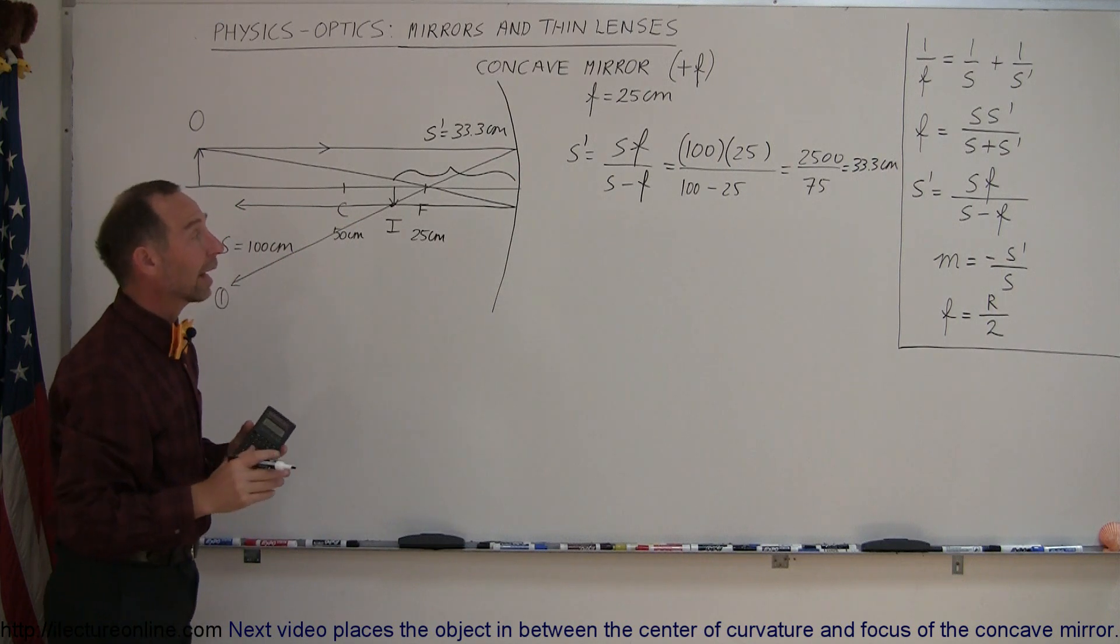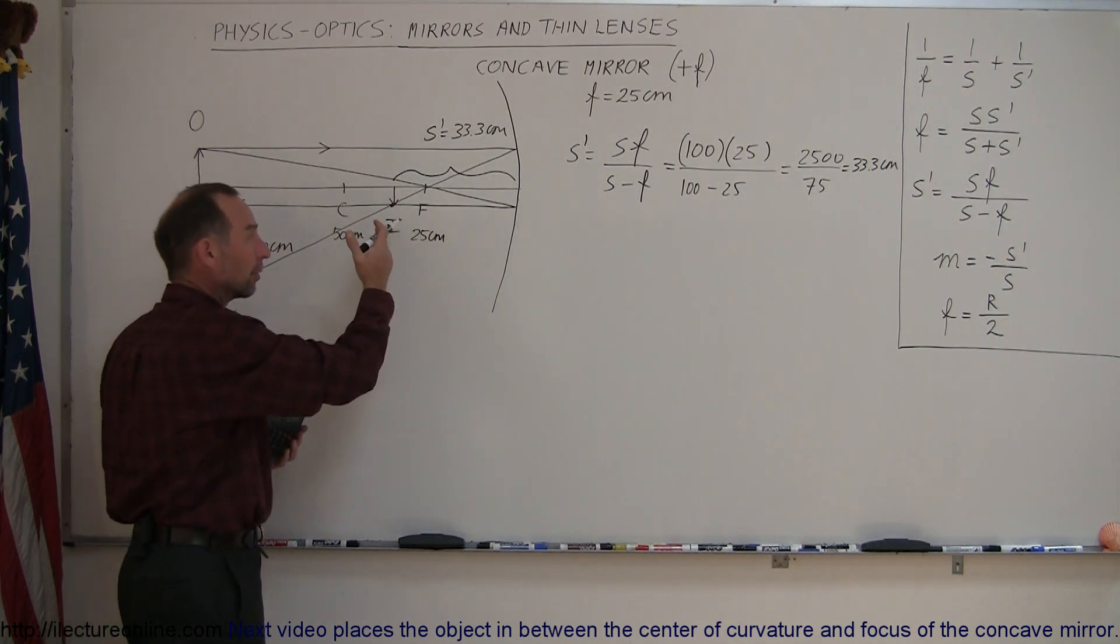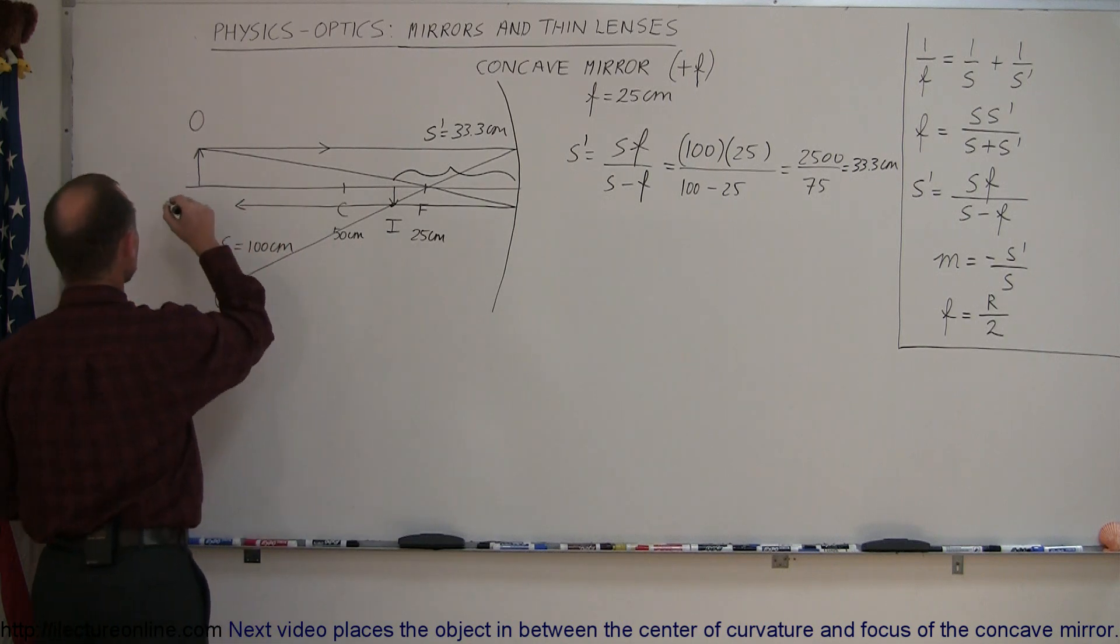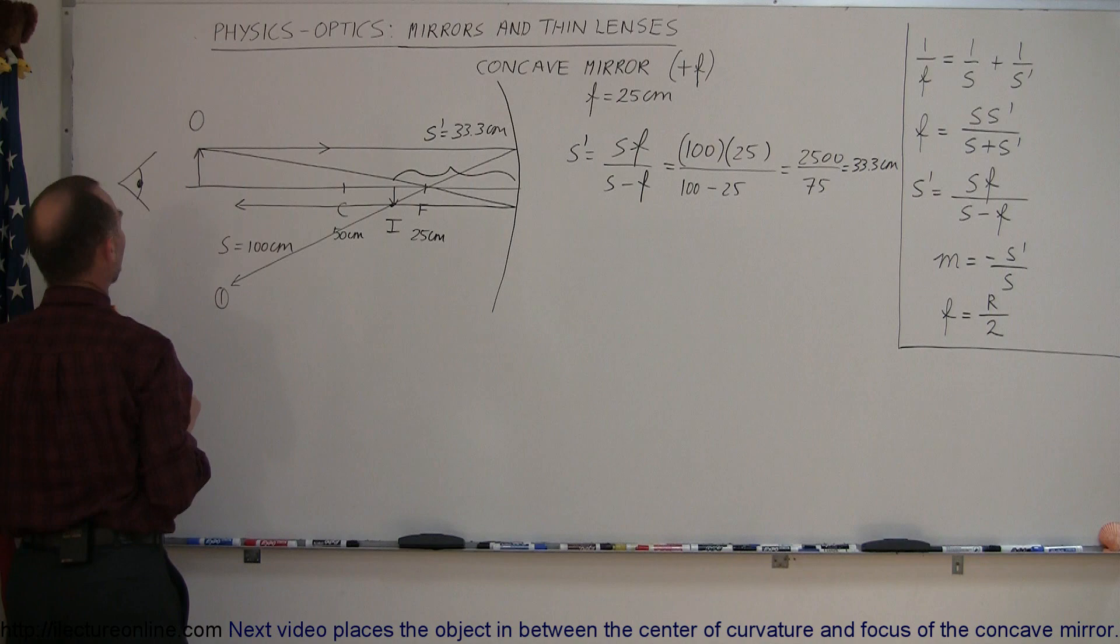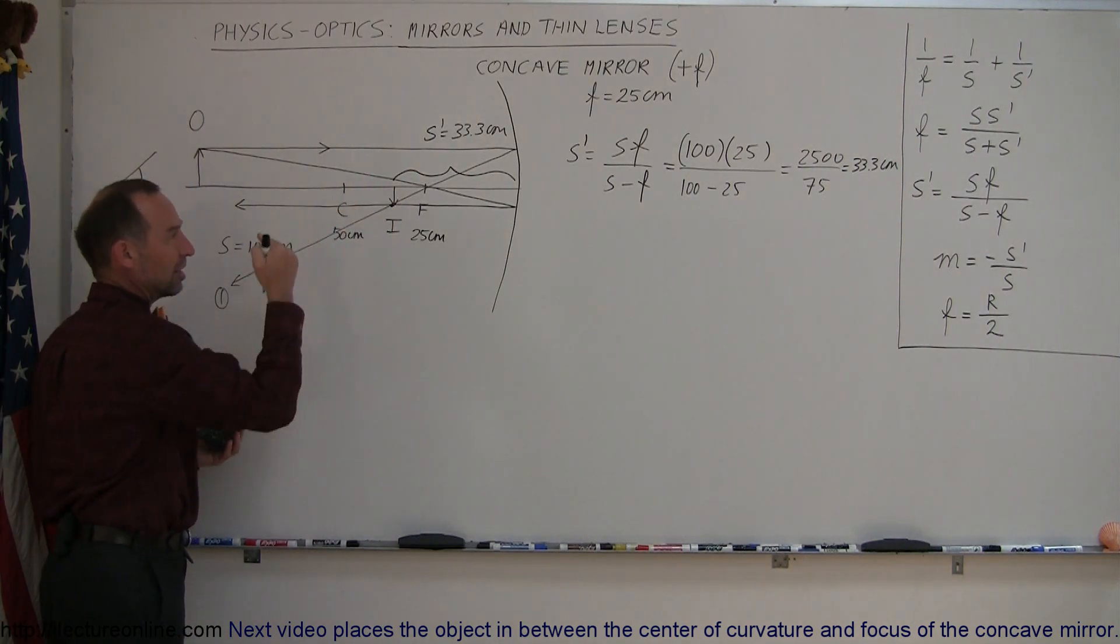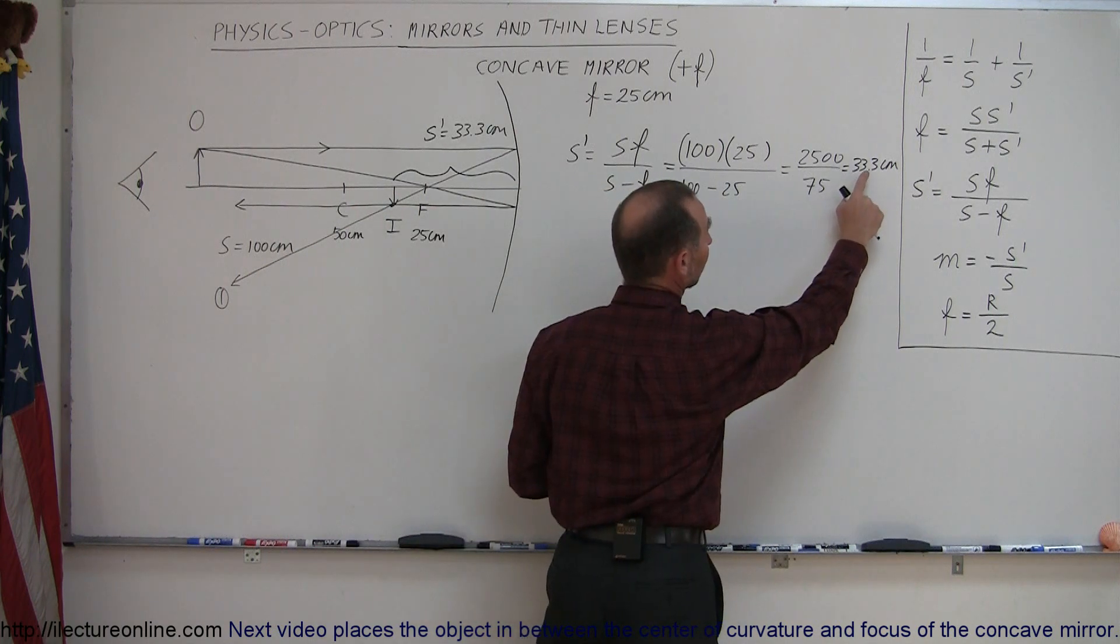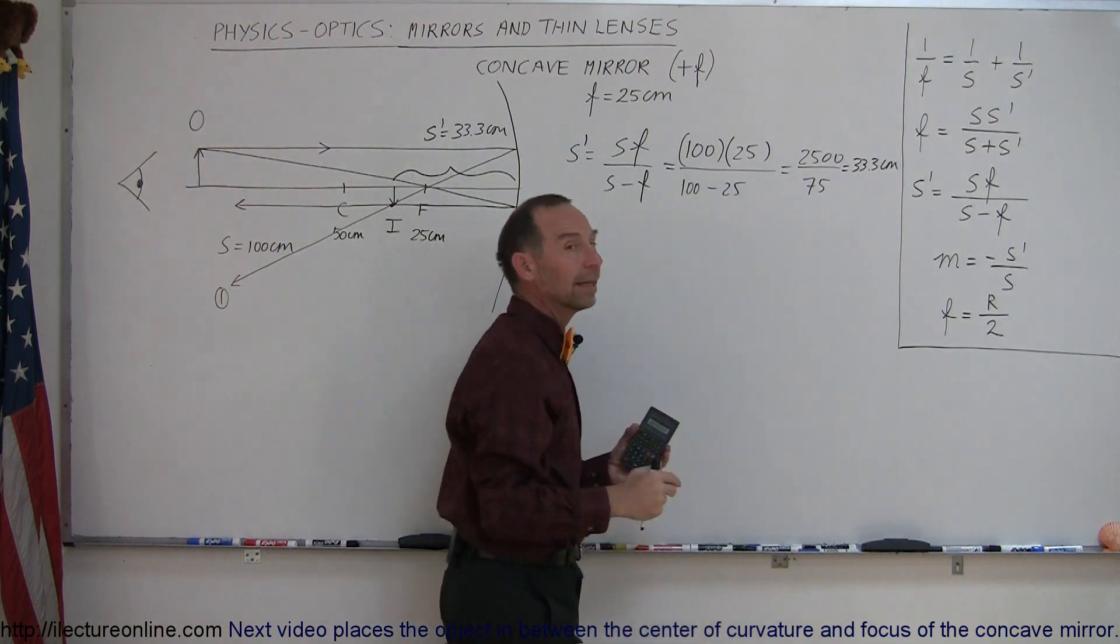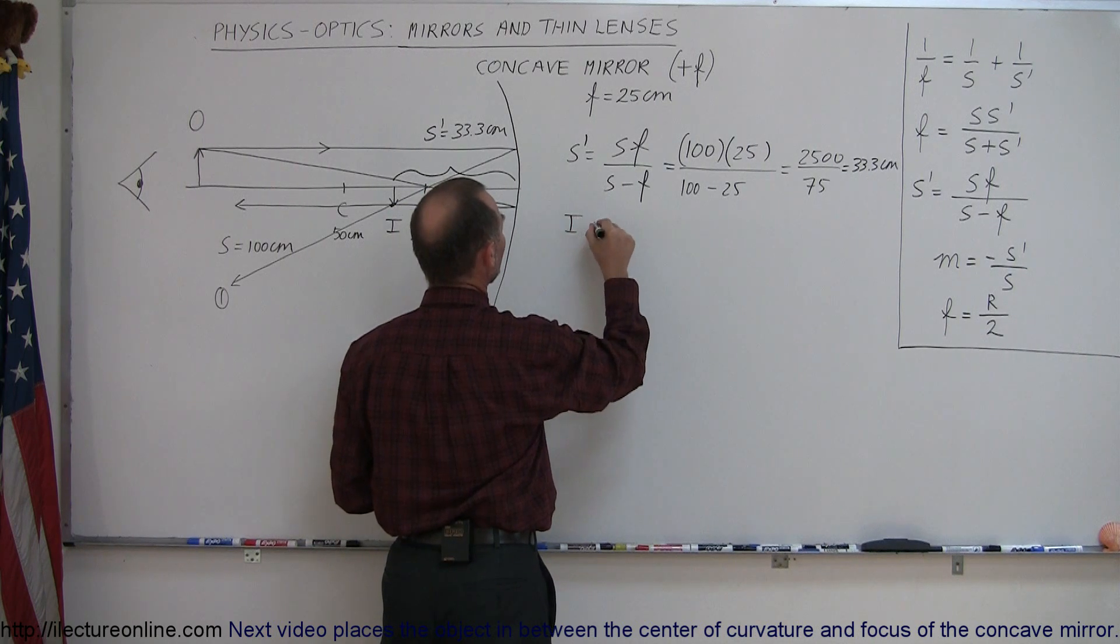The second thing we want to find out is if the image is real or virtual. Now, since the image appeared in front of the mirror, it would make it real. The observer would be standing right here. There's a little eyeball representing our observer, actually seeing the image in front of the mirror. Another way in which you can tell the image is real is because this is a positive quantity, which means it was in front of the mirror. So the image is real.